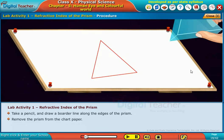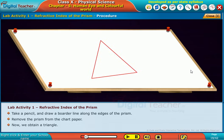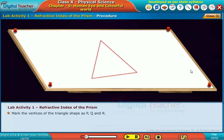Remove the prism from the chart paper. Now we obtain a triangle, mark the vertices of the triangle shape as P Q and R. The refracting surfaces could be rectangular in shape. Measure the angle between P R and P Q. The obtained angle is called the angle of the prism A.